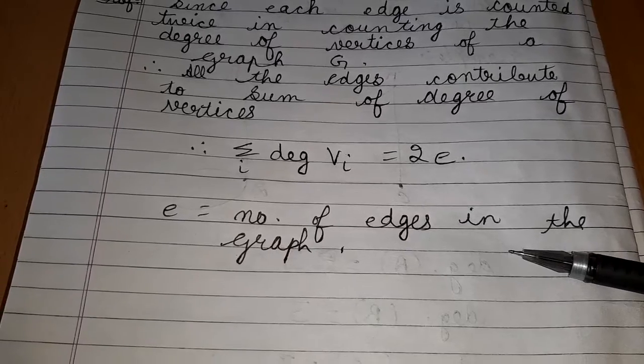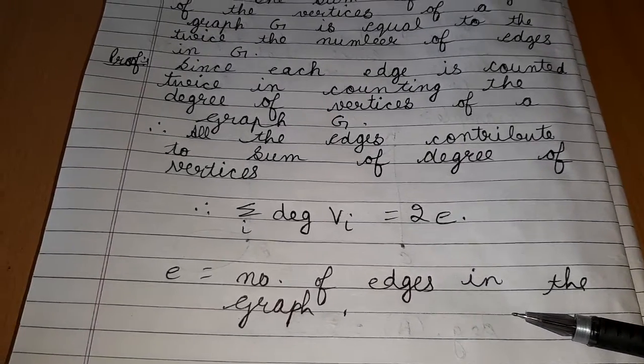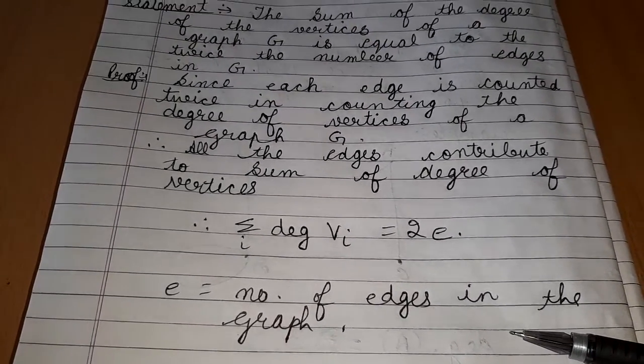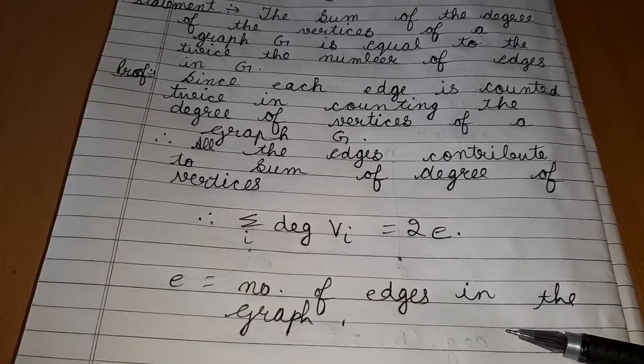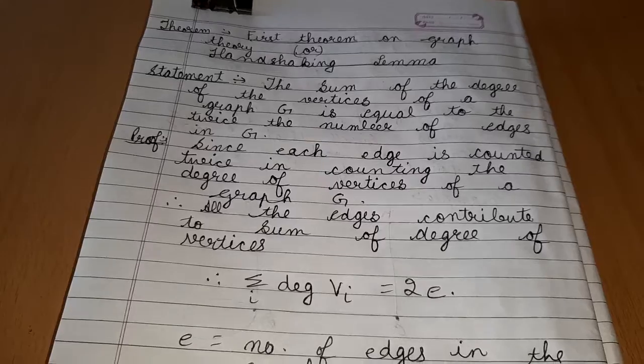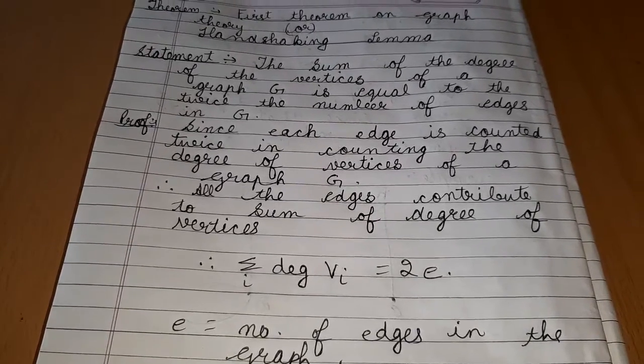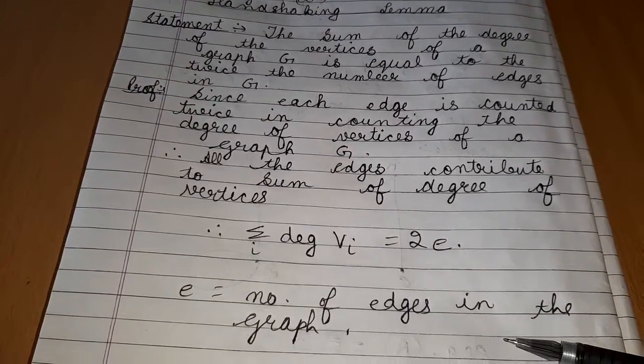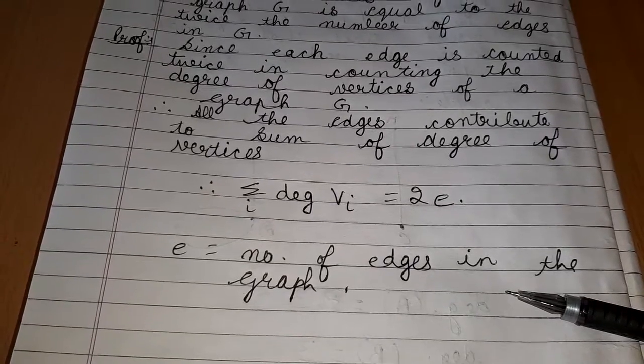This is called the handshaking lemma because if several people shake hands, then the total number of hands shaking must be even, because just two hands are involved in each handshake.